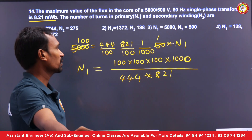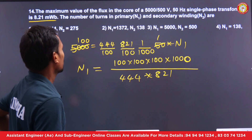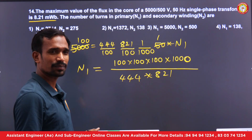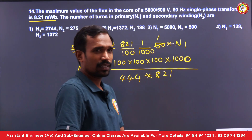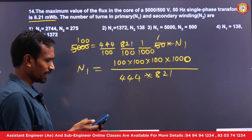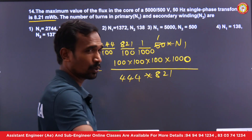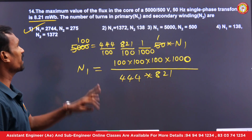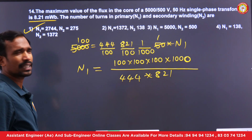Using a calculator: 1,000,000 divided by 4.44 divided by 821 gives approximately 2743 — so N1 is approximately 2743. What about N2? For a 5000-turn primary, N2 for 500 volts would be around 274, roughly one-tenth of N1, based on the turns ratio.